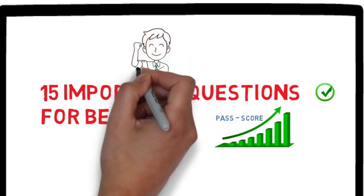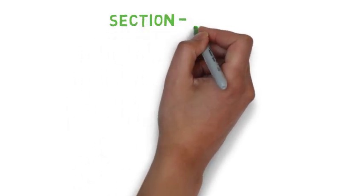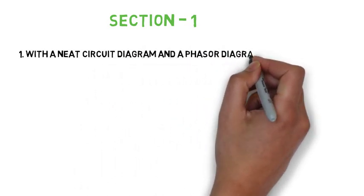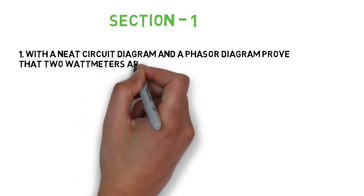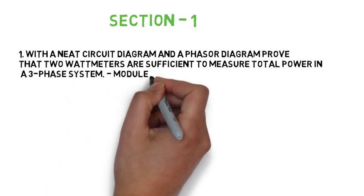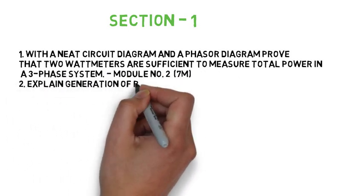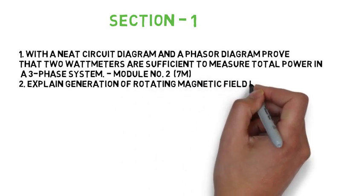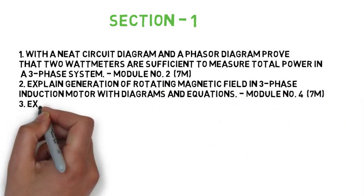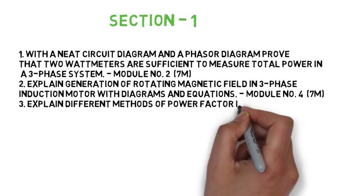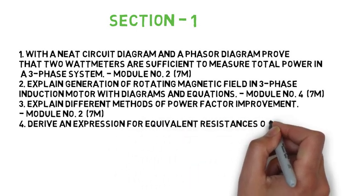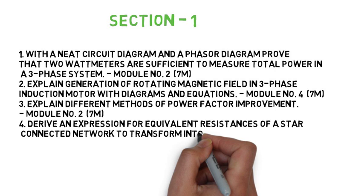Starting with Section 1, there are 4 important questions. The first question is: With a neat circuit diagram and a phasor diagram, prove that 2 watt meters are sufficient to measure total power in a 3-phase system — 7 marks. The second question: Explain generation and rotation of magnetic fields in a 3-phase induction motor with diagram and equation — 7 marks. The third question: Explain different methods of power factor improvement — 7 marks. And the fourth question: Derive an expression for equivalent resistance of a star connected network to transform into a delta connected network — 7 marks.